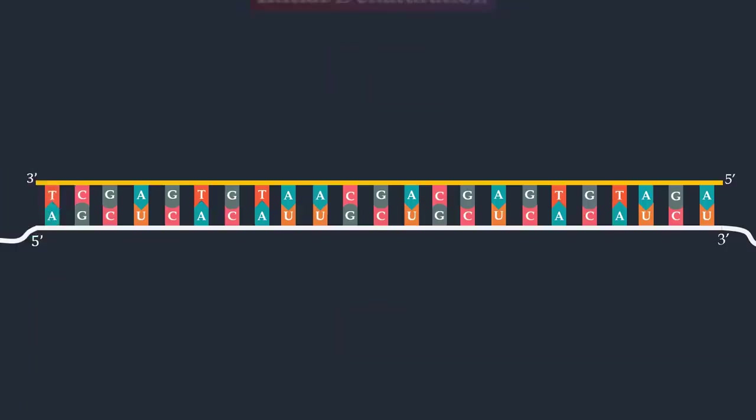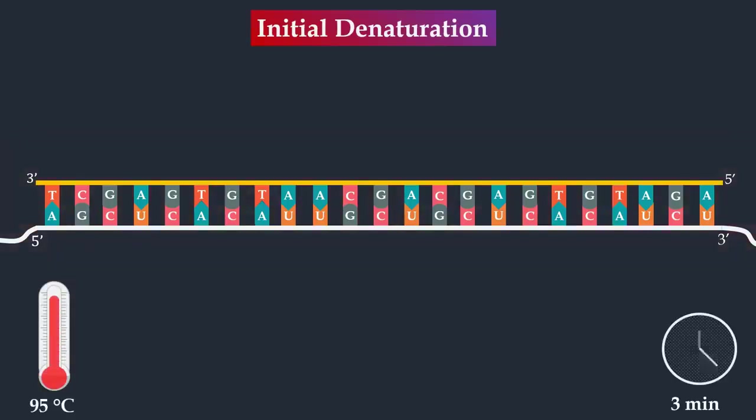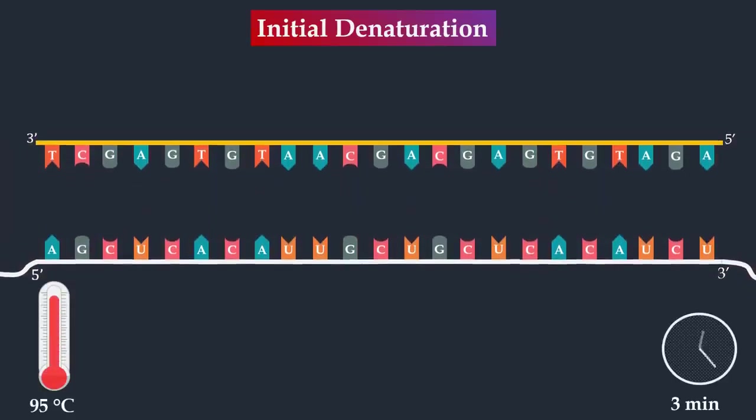Next, an initial denaturation step is applied, causing denaturation of the RNA-DNA hybrids. This step is required for the activation of DNA polymerase and simultaneously the inactivation of reverse transcriptase.